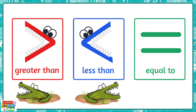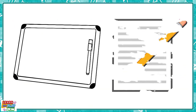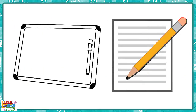Now that you know all about the three symbols, let's put it into practice with five questions. Use a whiteboard or paper to write the number sentence that you see and fill in the missing symbol. You will get five seconds to answer each question. How many will you get right?